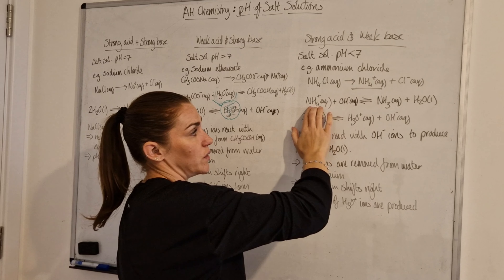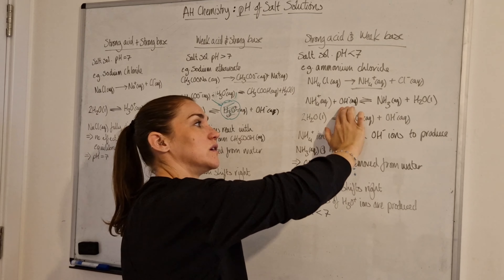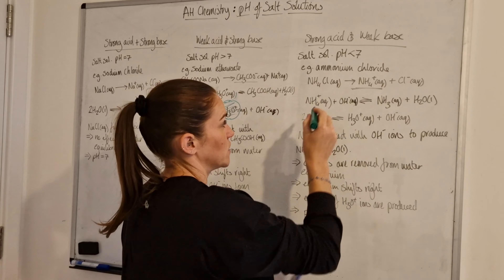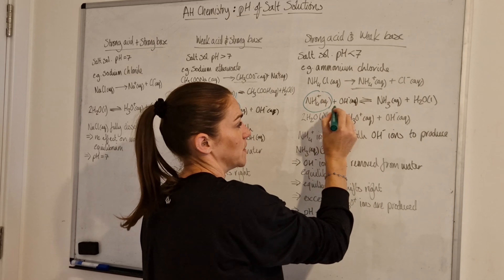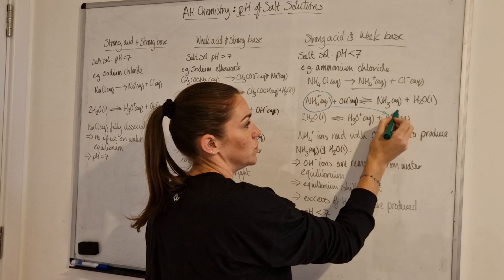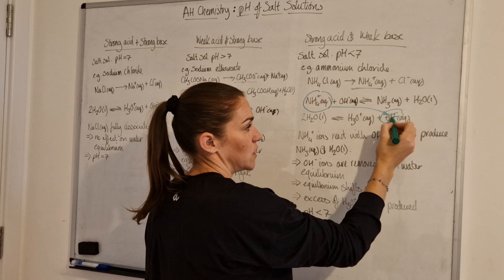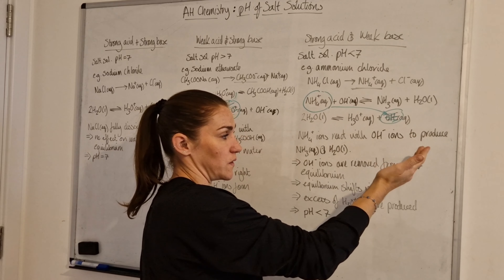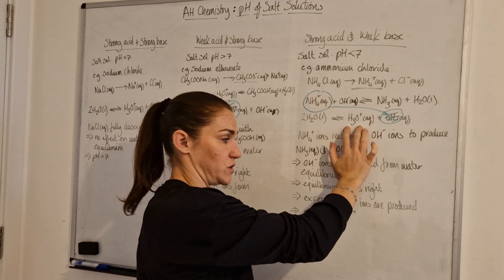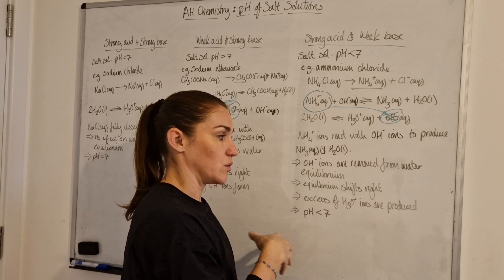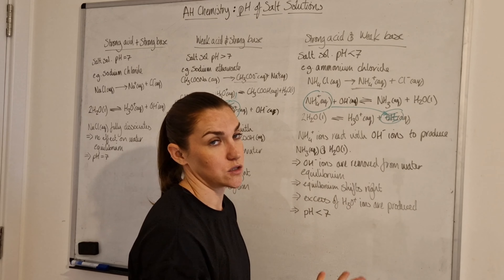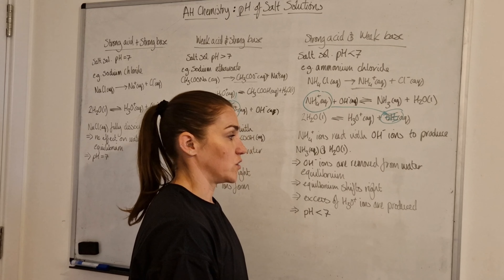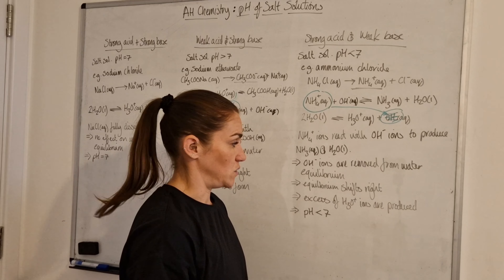The ammonium ions react with hydroxide ions to form ammonia and water. This removes hydroxide ions from the water equilibrium, so the equilibrium shifts to the right — but this time producing an excess of hydronium ions. This brings the pH to below seven, because pH depends on the concentration of hydronium ions: the higher the concentration of hydronium ions, the lower the pH.